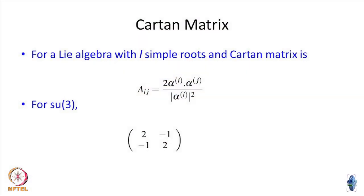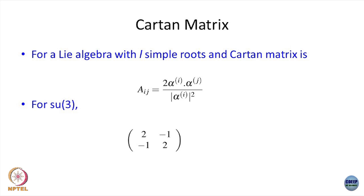The angle is given between different simple roots — you can write the matrix form of it, and so on. You can construct the Cartan matrix for SU(3). For completeness, you can write down the Cartan matrix between simple roots. Simple roots are alpha1 and alpha2; we have already seen alpha1 dot alpha2 is minus half. So 2 times minus half is minus 1 — the off-diagonal elements are minus 1. The diagonal elements: numerator and denominator will cancel, but the factor of 2 will remain, that is why you have a 2 here. So this is the Cartan matrix. Sometimes they write just the Cartan matrix, sometimes they show it by a Dynkin diagram — these are various ways of conveying what you are looking at in an abstract Lie algebra.